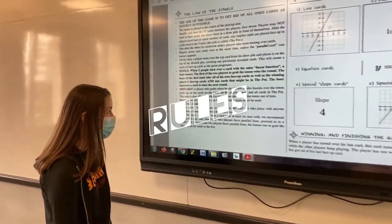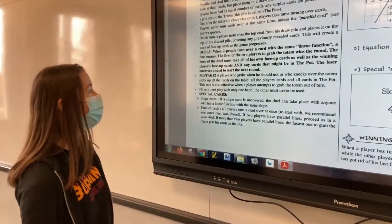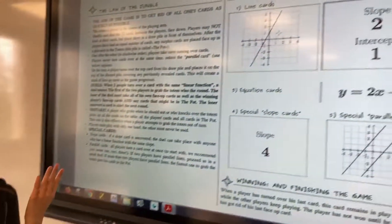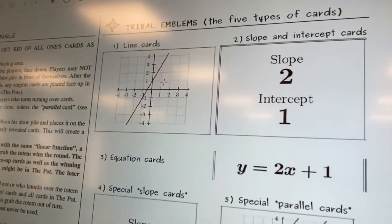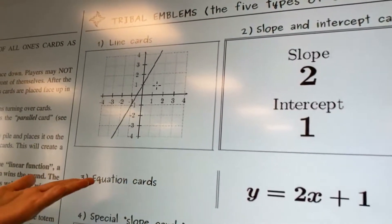When two people turn over a card with the same linear function, a duel ensues. We can see this in an example, the same slope and the same intercept on the linear function.